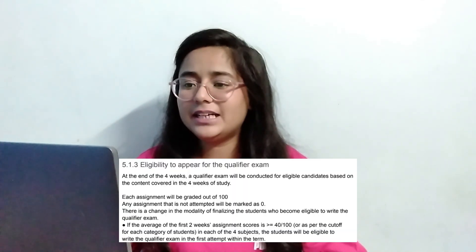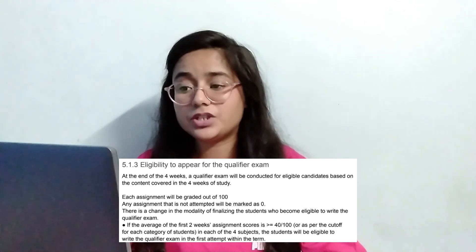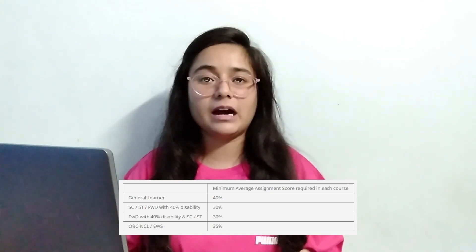So, you have registered, you have started studying, you have submitted assignments, and now you want to be eligible for the qualifier. For this, IITM has set a criteria: in the first two weeks, the average of your assignment marks should be 40 or above. The cutoff is not the same for all categories.